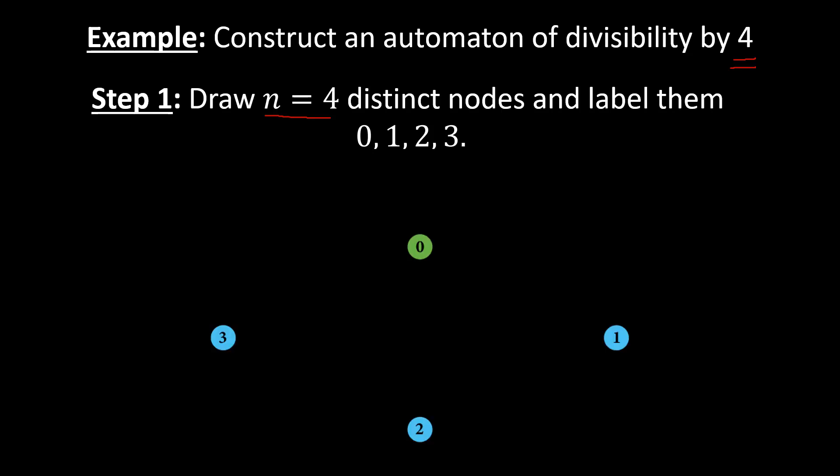I place the points in the plane in a symmetric arrangement — you don't have to place them in any particular fashion, but choosing a symmetric layout makes the arrows easier to draw and the graph more visually clear. That's why I chose this arrangement. That completes step 1.